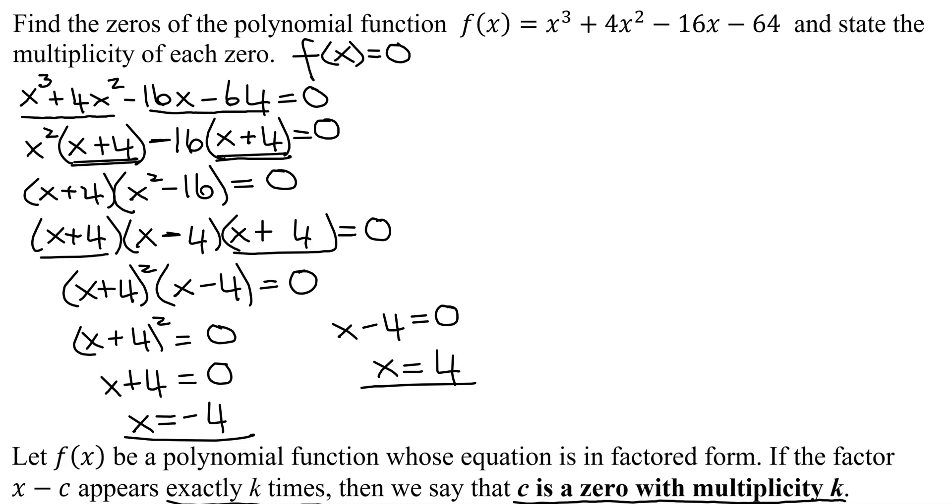In our case, I have (x + 4)². How many times does that factor occur in the equation? Twice. So I know that x = -4 has a multiplicity of 2.